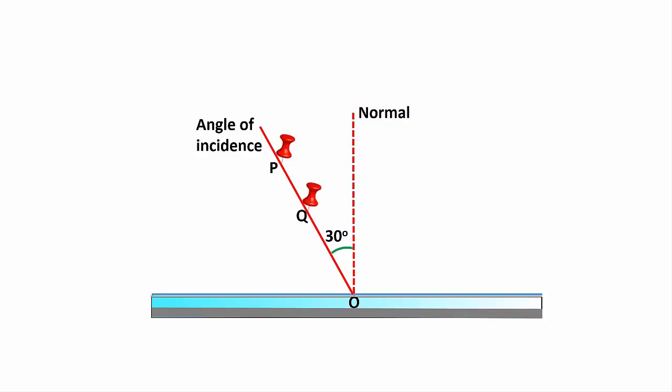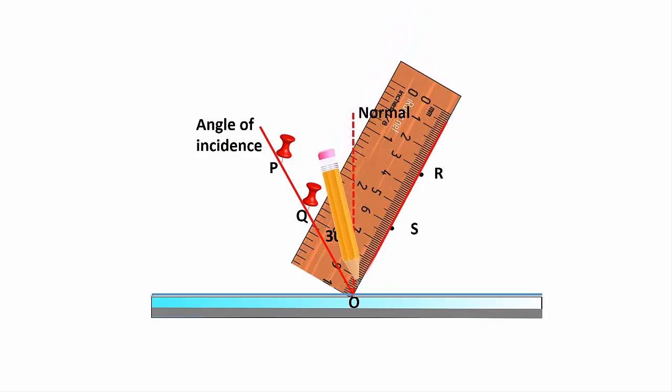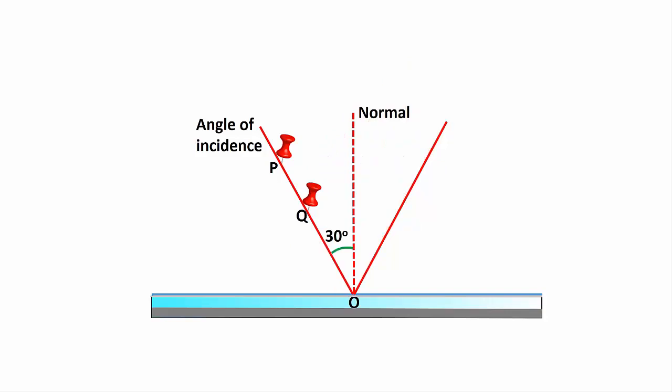Place two pins P and Q along the line as shown here. With your eyes at position shown, place two other pins R and S to coincide with the images of P and Q. Remove pins R and S and join the dots left with a straight line.